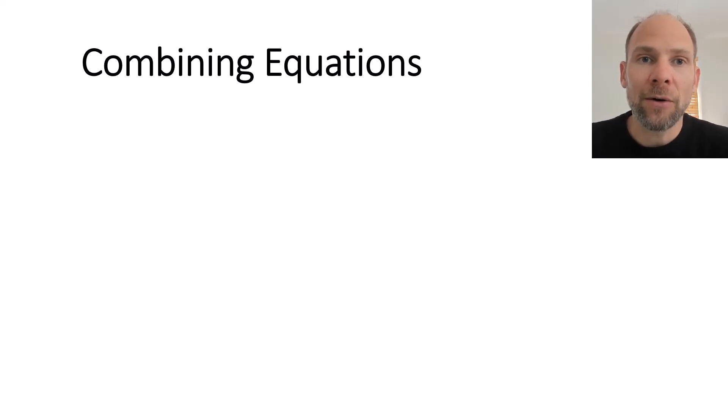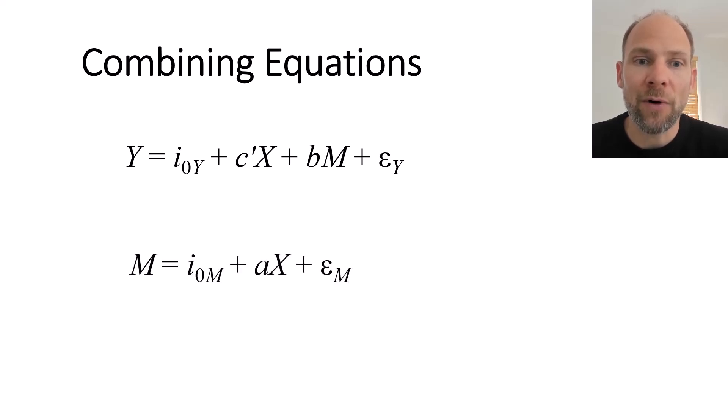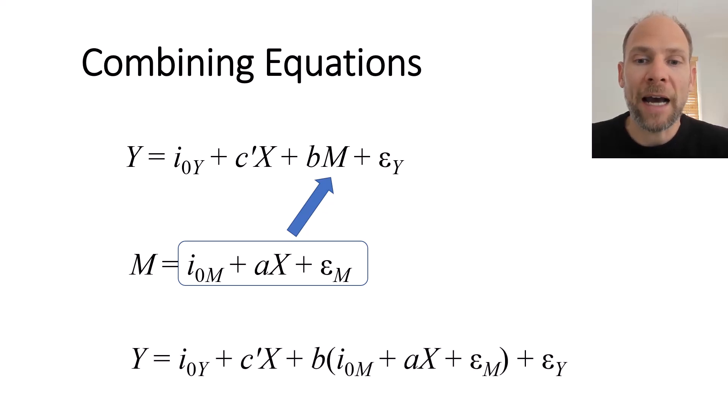For that we have to take a look at the equations in a little bit more detail and how we can combine them. We have our equation for the outcome variable Y with the two predictors X and M, and then our equation for M which is only dependent on X. Now what we can do is take what we have for M in the second equation and insert it for M in the first equation.